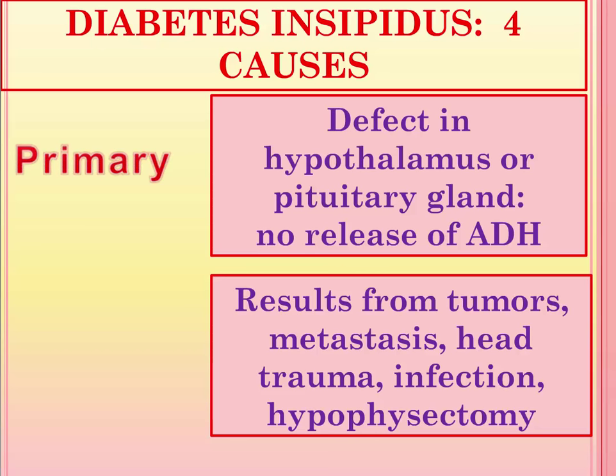Two other potential causes of diabetes insipidus: the first is primary, where there is an actual defect in the hypothalamus or posterior pituitary gland, resulting in no release or diminished release of antidiuretic hormone. The second is secondary, resulting from a tumor or metastasis of other cancers in the area of the pituitary, as well as trauma, infection, or removal of the pituitary — such as a hypophysectomy for hyperpituitarism or tumor removal. Anyone with this history is at risk for developing diabetes insipidus.